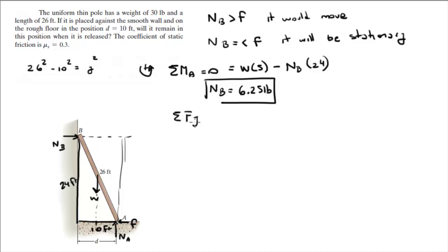Now, sum of the forces in the Y are equal to zero. That equals the weight going down plus the normal going up. So you find the normal to be at 30 pounds.